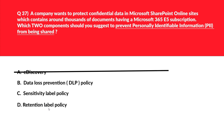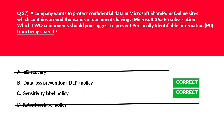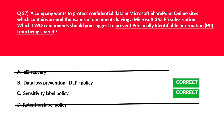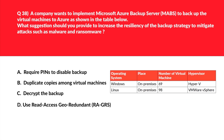Option D — retention label policy — helps retain what we need and delete what we don't, at item level for documents and mail. This is not required by the scenario, so D is out. We'll lock options B and C as the correct answers.